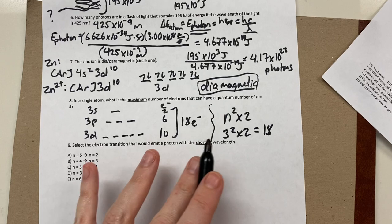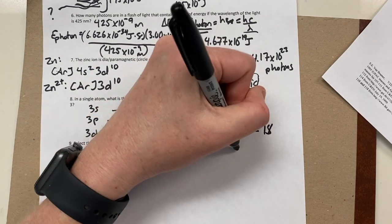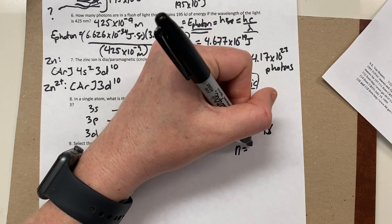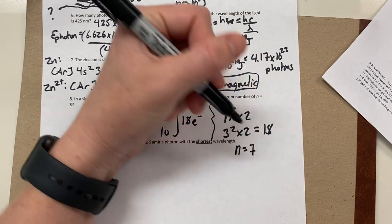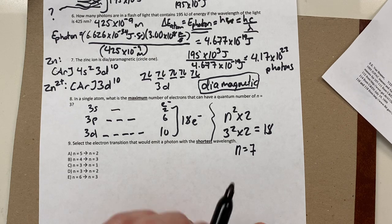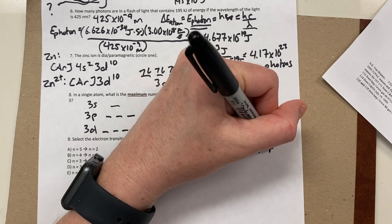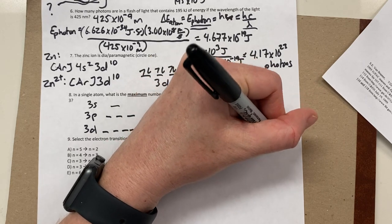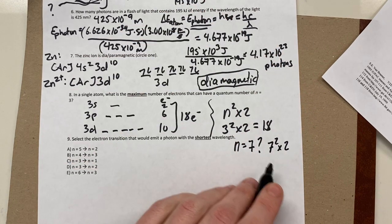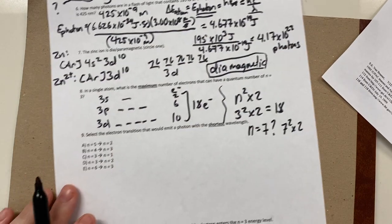You can also use the formula 2n² to get this answer quickly. For n equals 3: 3² × 2 = 18. This formula is especially useful for theoretical or larger values — for example, n equals 7 would give 7² × 2 = 98 electrons.